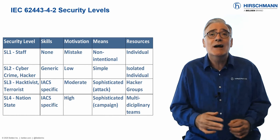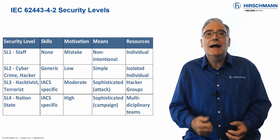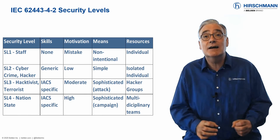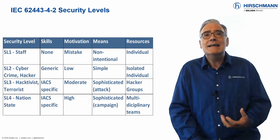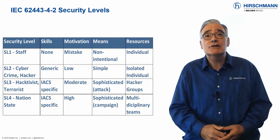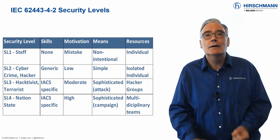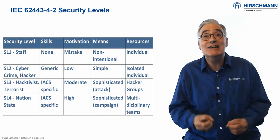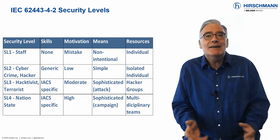SL1 indicates that a device is resistant to unintentional mistakes made by your own employees. SL2 indicates additional functionality designed to deter individual hackers who have low motivation. SL3 assumes that the attacker has knowledge of IACS systems such as equipment and protocols, together with a malicious agenda. SL4 indicates that a device can withstand an attack by a nation-state, together with all the resources that states may have.